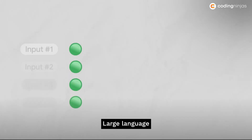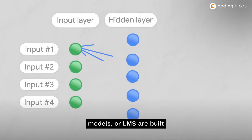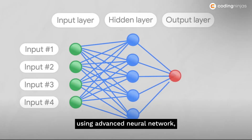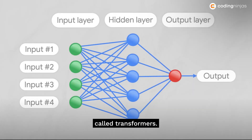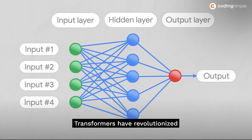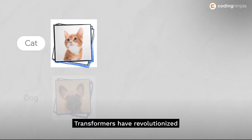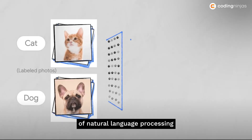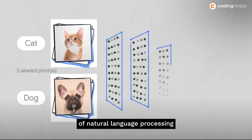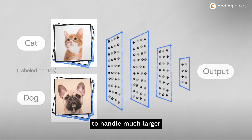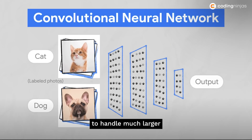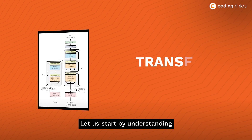Large language models are built using advanced neural networks, specifically a type called transformers. Transformers have revolutionized the field of natural language processing by allowing models to handle much larger datasets and learn complex patterns in data.